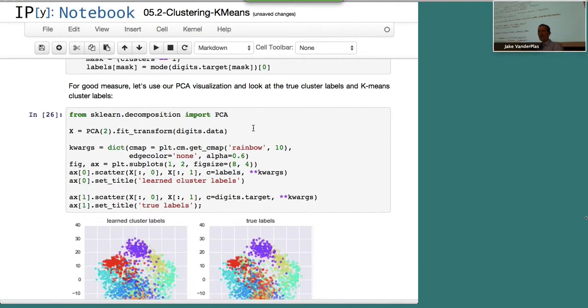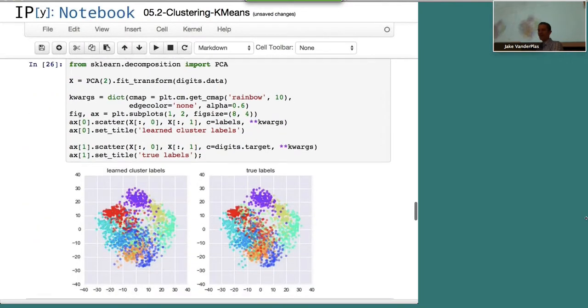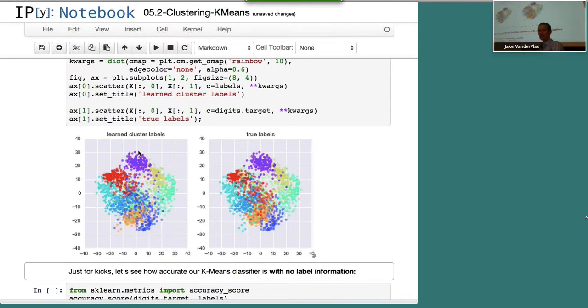And now what we can do is we can use our PCA visualization, and we can look at the learned cluster labels. So these are the cluster labels that are learned from the unsupervised technique, without any input. And we can compare them to the true labels. And we see, this is really cool, right? We've learned that these digits are all the same. And the true labels tell us that these digits are all the same.